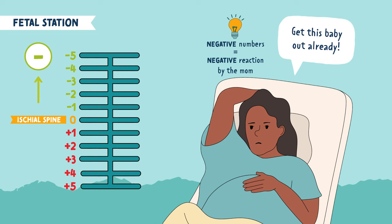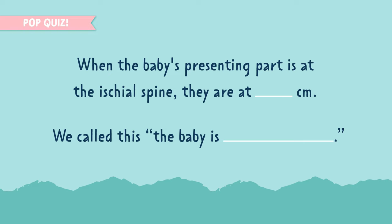Let's do a quick pop quiz. When the baby's presenting part is at the ischial spine, they are at blank centimeters. Zero. Remember, the ischial spine is at fetal station zero. We call this the baby is engaged. When the baby's presenting part, most commonly the head, is at the ischial spine, we say the baby is engaged.